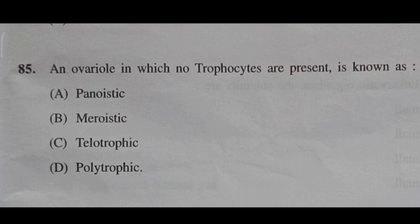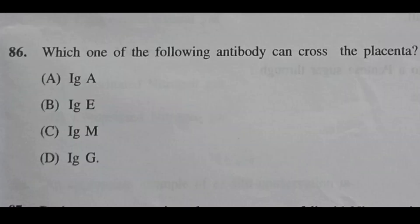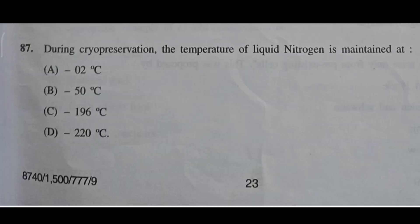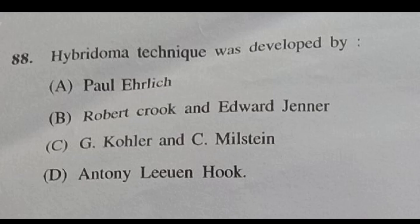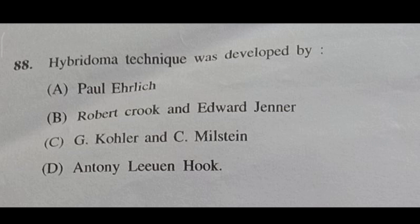Question 85: An ovariole in which no trophocytes are present is known as — the speaker is not confident about this answer and invites viewers to comment. Question 86: Which one of the following antibody can cross the placenta? Answer will be D, IgG. Question 87: During cryopreservation, the temperature of liquid nitrogen is maintained at — answer will be C, minus 196 degrees centigrade.